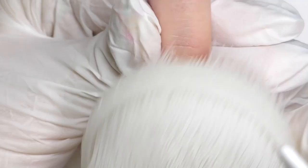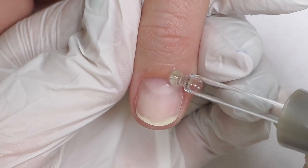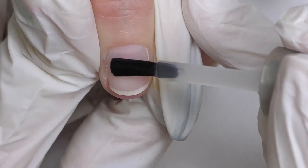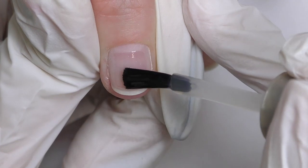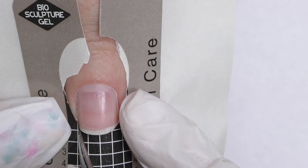After filing off the surface shine, do not forget to carefully clean the dust. You can use cleanse with the lint-free napkin to make sure it is all clean. Then we apply vitamin dose and the base coat. Apply it only on the center of the nail, near the cuticle and the free edge.